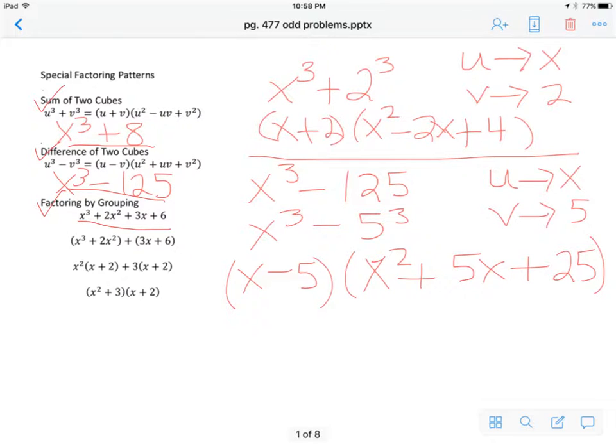Here's example one, x cubed plus 8. So that matches the pattern of u cubed plus v cubed. u cubed plus v cubed is just a pattern. It's saying if you have a term that's cubed plus another term that's cubed, this is the way it's going to be laid out. So the very first step that you have to do is take the problem that you're given and make sure that both terms are written as perfect cubes.